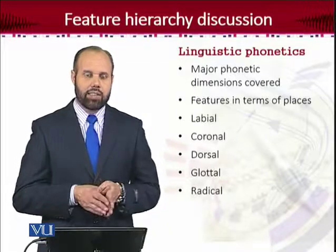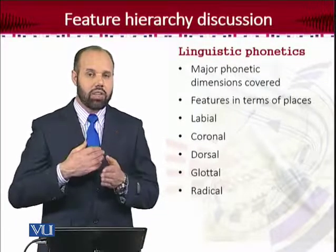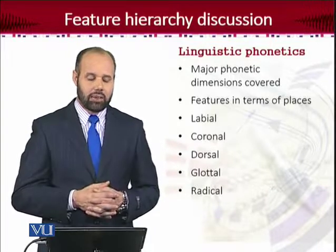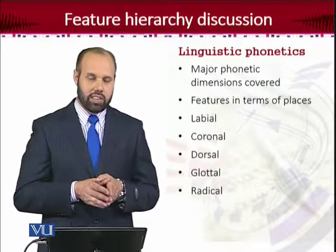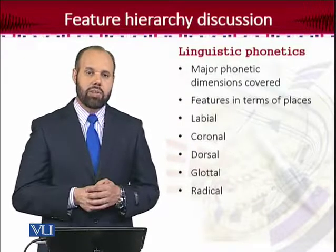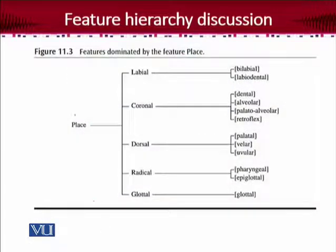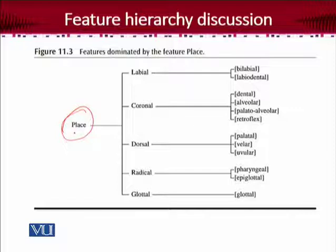And the last one is radical, when the pharyngeal and the epiglottal are also active. So that's a brief discussion on the places of articulation. Now let me take you to the places of articulation within this feature hierarchy. This figure shows us the place of articulation and the feature hierarchy on the basis of the place of articulation, and it is given in your book in chapter 11. There are various types of these hierarchies given there which you can explore.